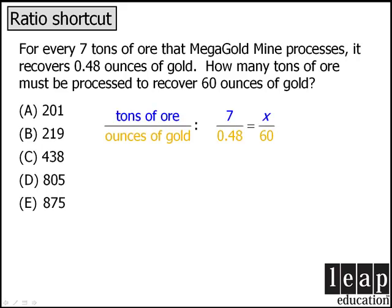Now to solve this equation, we'll first cross multiply. And now we can simplify the right hand side to be 420. At this point we'll divide both sides by 0.48 to get the following.